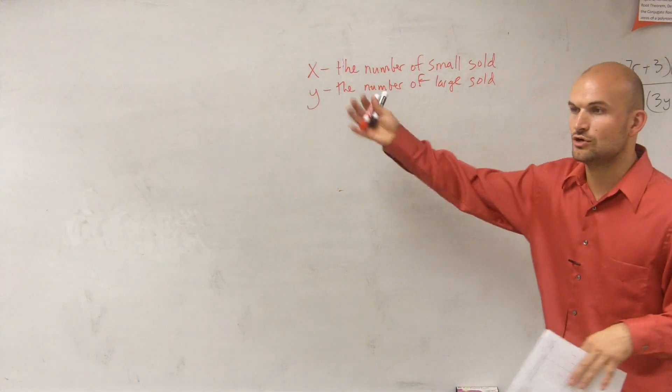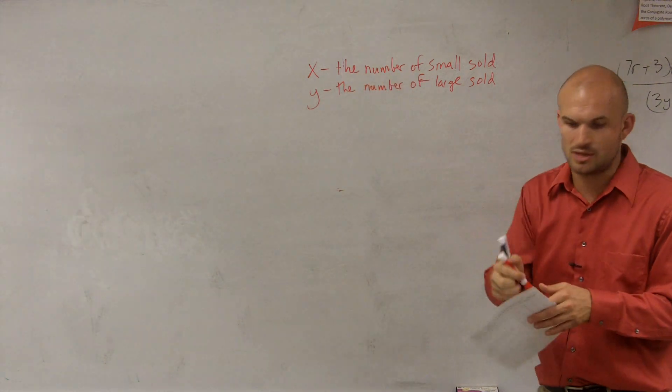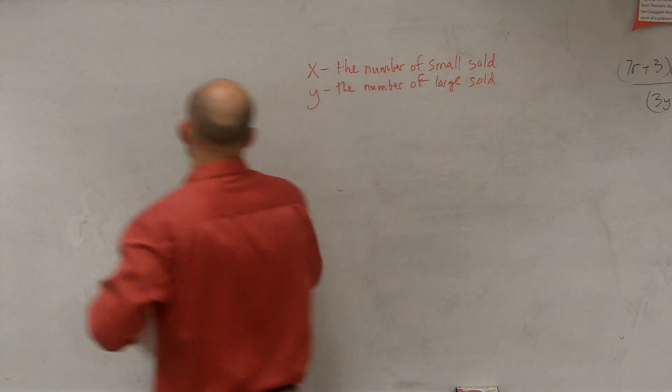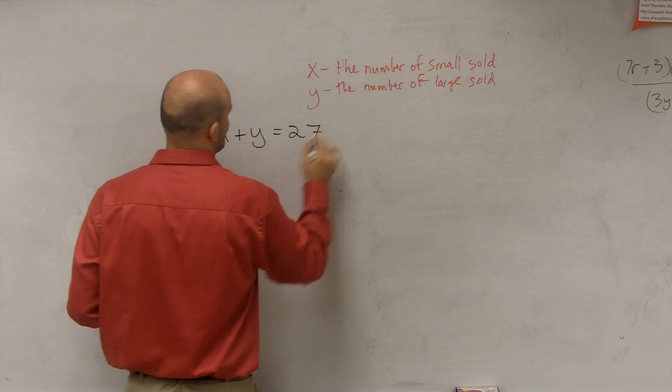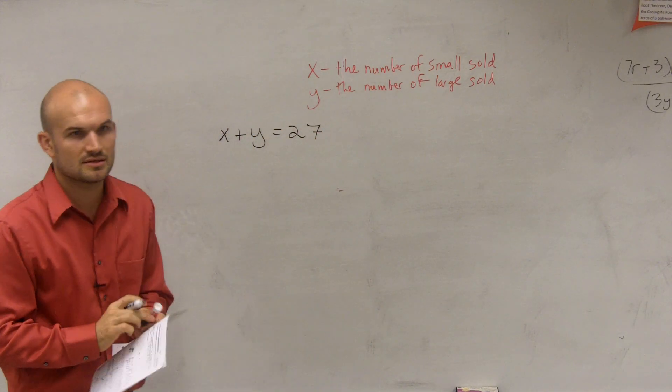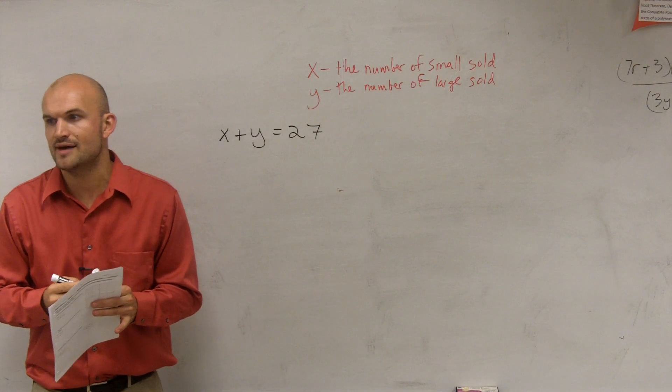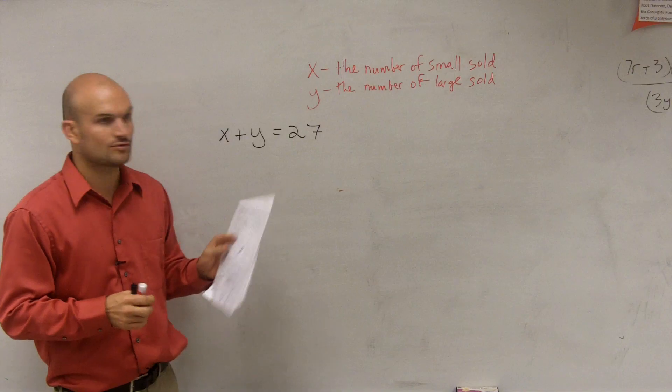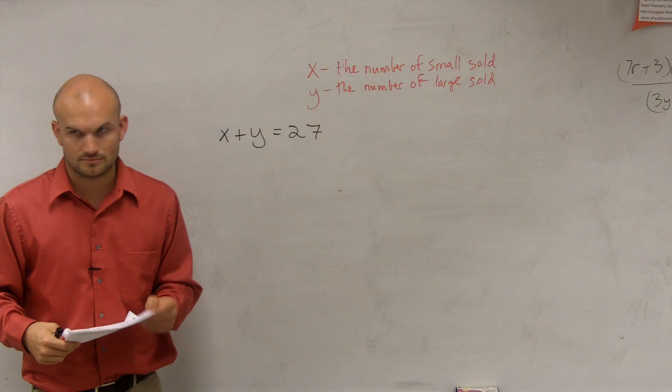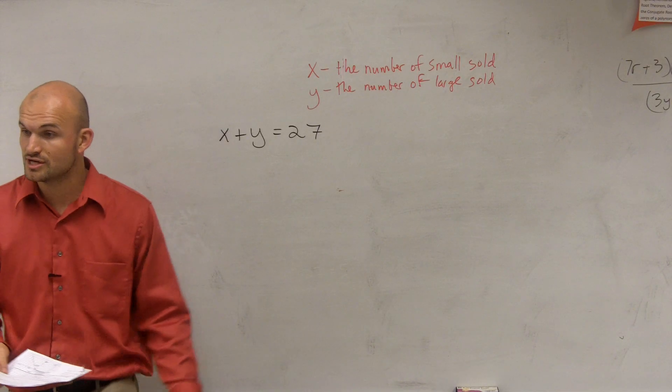So you could say if she sold 27, that means some of them are small, some of them are large, right? And we could write X plus Y equals 27. Does that make sense? If the total number sold is 27, then the number of small plus the number of large equals 27. Make sense? Okay, but we don't know what those numbers are, right? That's why we use variables.